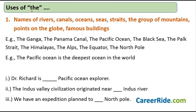Now let's move on to the definite article 'the', used when we talk about specific or definite things. The first rule: we use 'the' before names of rivers, canals, oceans, seas, straits, groups of mountains, points on the globe, and famous buildings. These are the types of things before which we use the definite article 'the'.